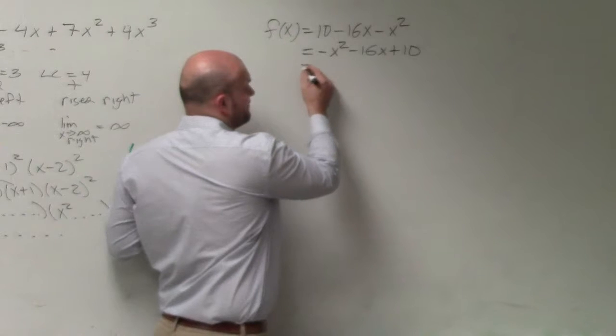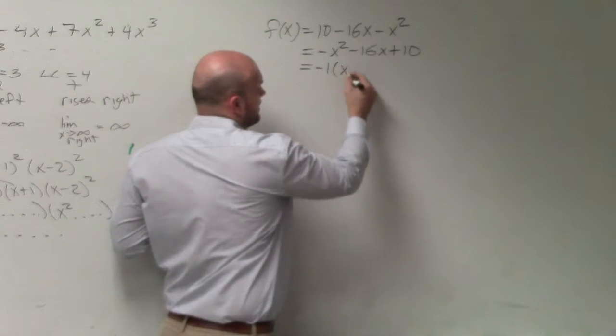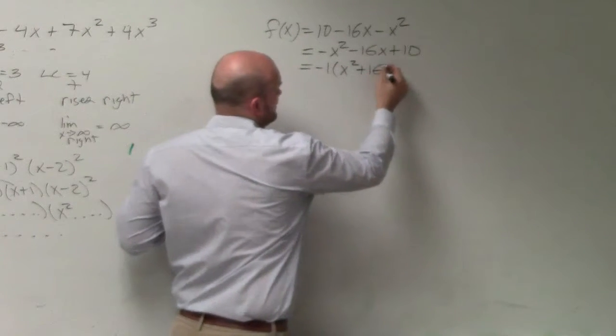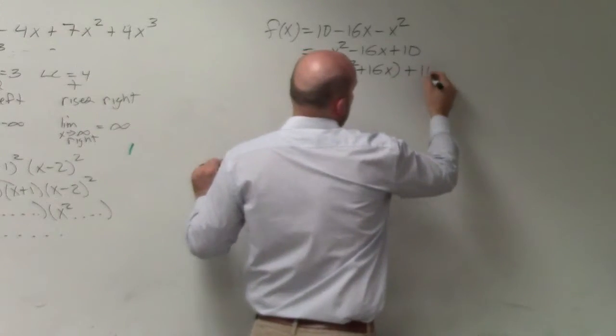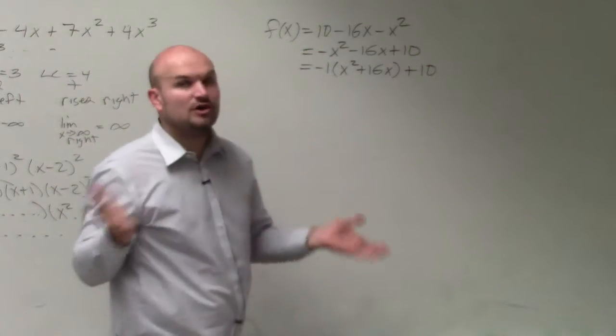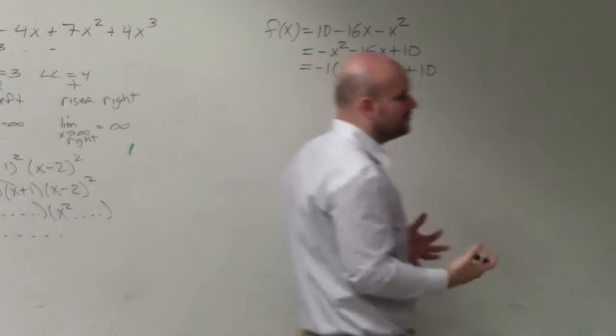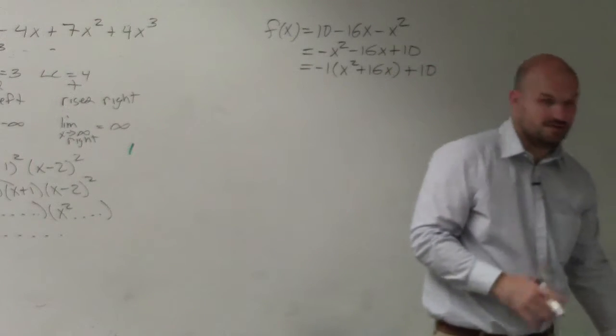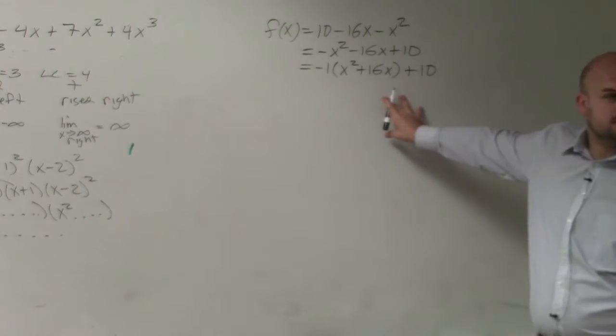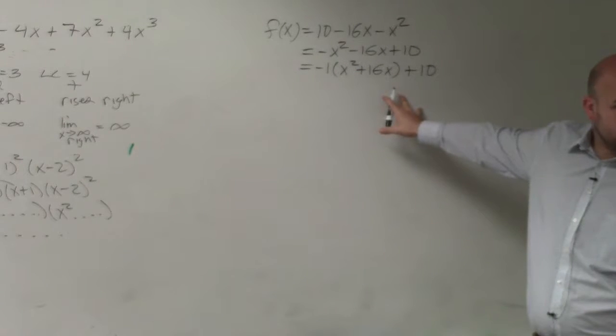So what we're going to do is we're going to factor out a negative 1 out of just the first two terms. You can factor out of all the terms, but to make things simple on your life, I prefer to factor it out of only the first two terms. Does everybody see what I've done so far and be okay with it?